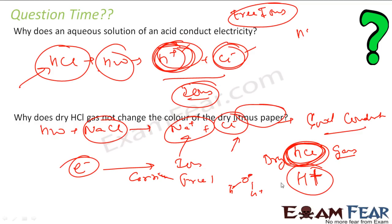We will explain why compounds break into ions in water in class 11, where we will see that the water molecule is slightly positive on one side and slightly negative on the other — it has some charge. So Na⁺ comes to one side and Cl⁻ comes to the other side and breaks. Just understand for now: you put any salt in water, it breaks into ions; you put any acid in water, it breaks into ions — and thus it conducts electricity. The reason why it breaks in water we will learn in class 11.